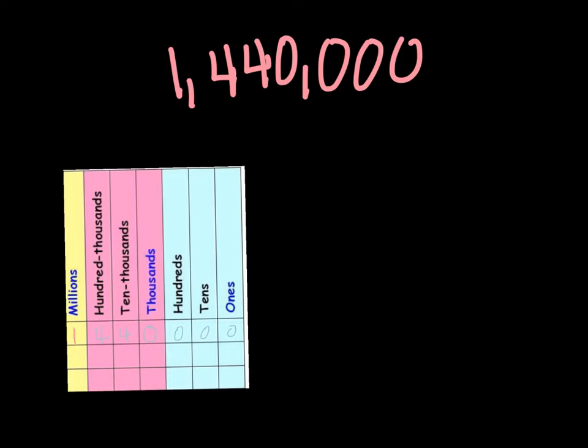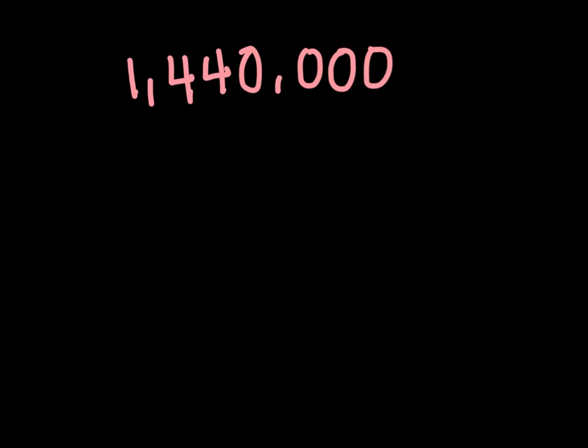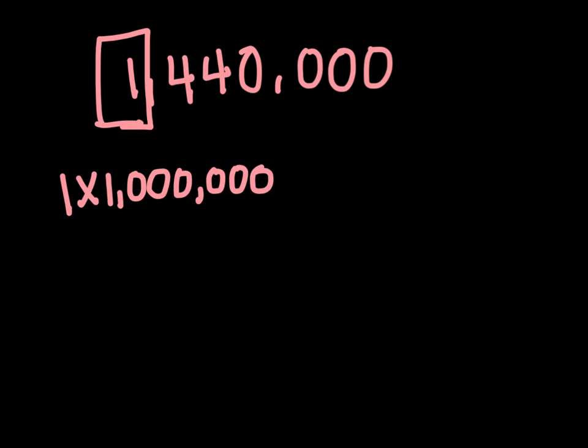So let's talk about how our two numbers, the two 4s, are related and what their values are going to be. So as you can see, our number 1,440,000 is written in standard form right now. We just have our digits. Now let's think about how we're going to write that same number in expanded form. So when we look at just the 1 in the millions place, we're going to start there. It's just like saying 1 times 1,000,000.